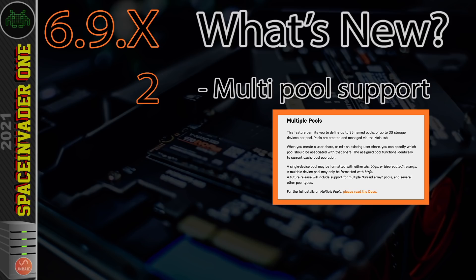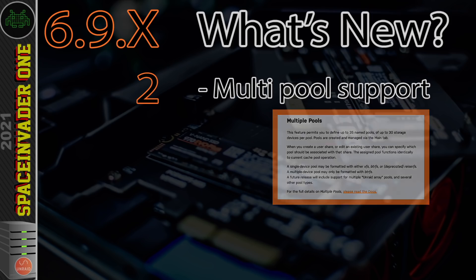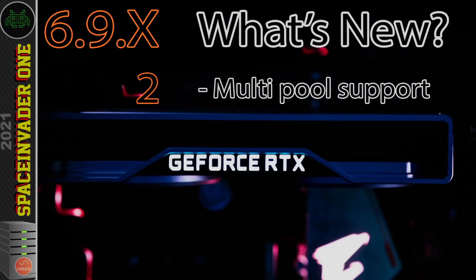Unraid 6.9 supports up to a maximum of 35 different named pools, and each of these pools can consist of between one and up to a maximum of 30 different drives.